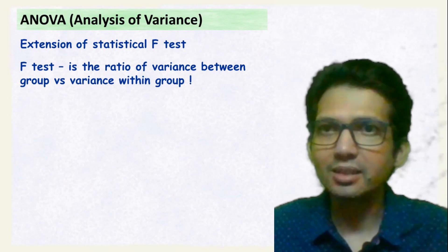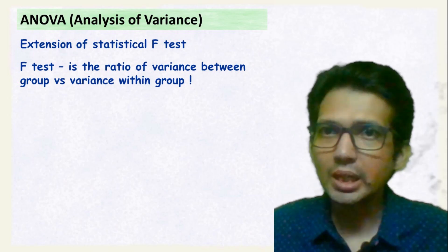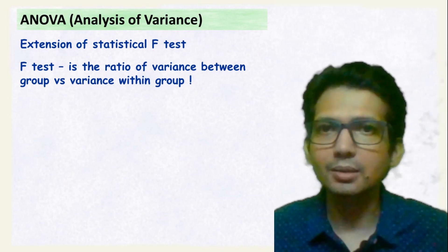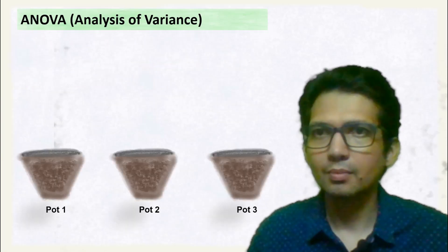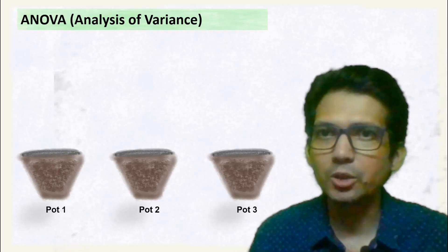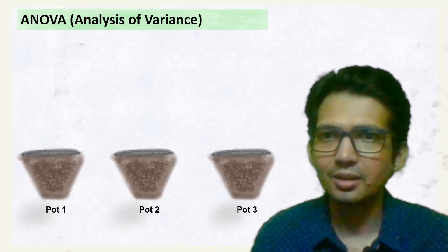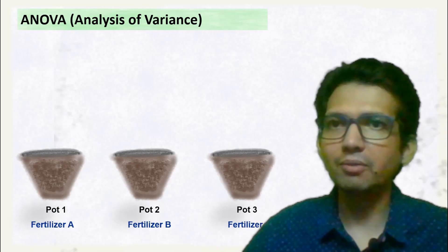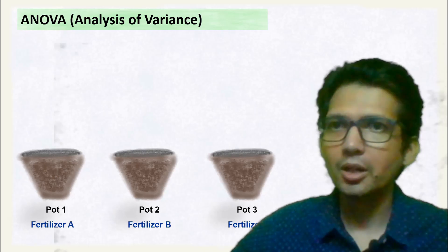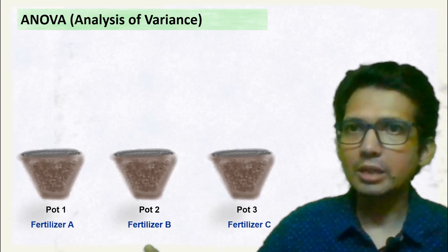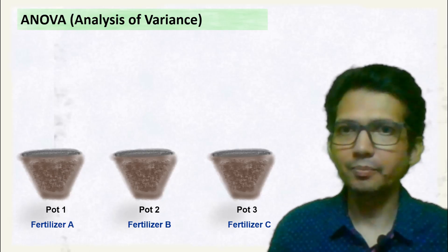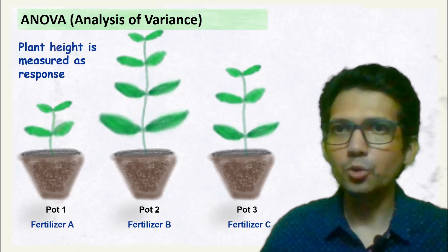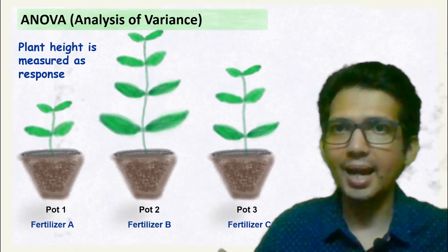Let's try to understand variance between group and variance within group with a simple example. Let's say you are trying to grow plants. You have taken three parts and each of them is given a different treatment — Treatment A, Treatment B, and Treatment C. Once the plant is grown, you measure the height of the plant as the response.